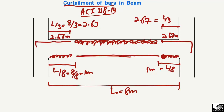This is the general recommendation by ACI 318-14 for the curtailment of bars in beams. Hope you guys understand. Don't forget to subscribe to our channel for daily civil engineering videos. Thank you for watching.